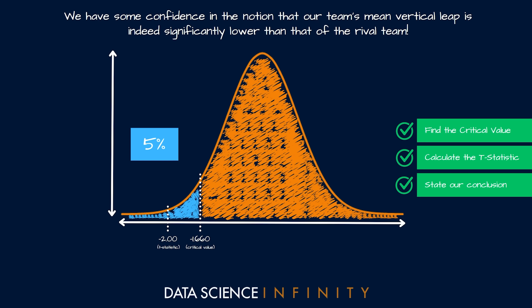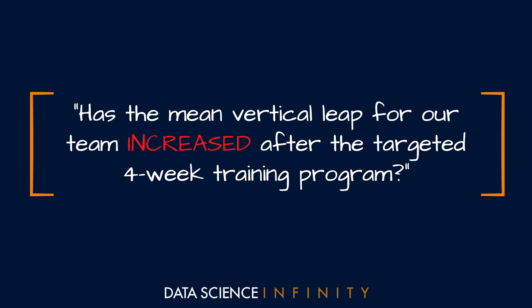With a significance level of 0.05, we reject the null hypothesis in favor of the alternate hypothesis — we have some confidence that our team's mean vertical leap is significantly lower than that of the rival team. As coach, we announce a rigorous four-week training program to build up the team's vertical leap. When we return, we'll ask whether the training worked, and for that we will use the paired t-test, which is exactly what we'll look at in the next video.